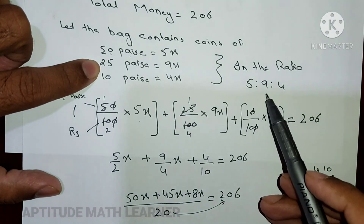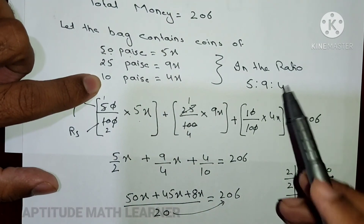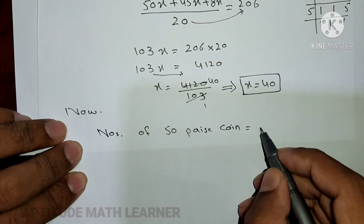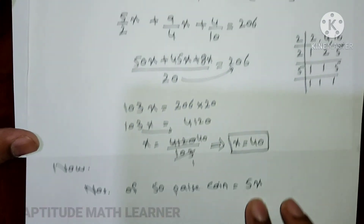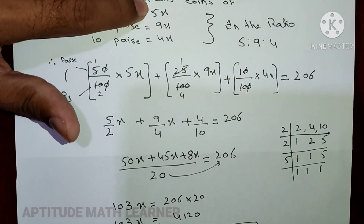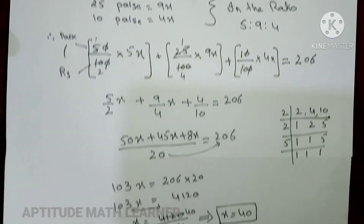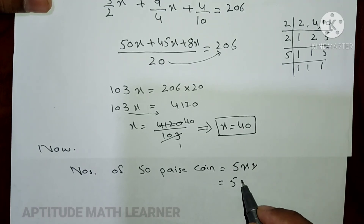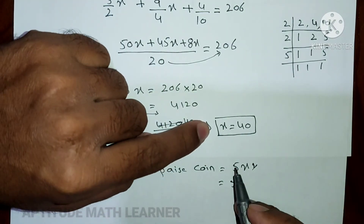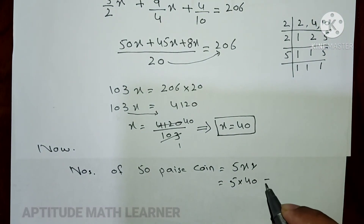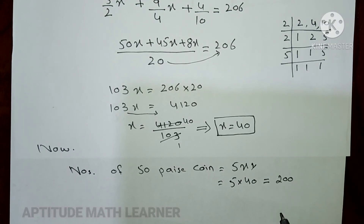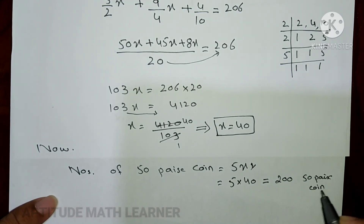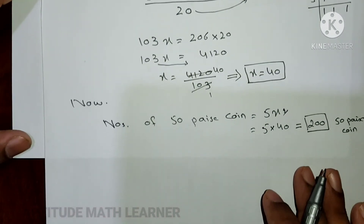25 paisa coins are in the ratio of 9 and 10 paisa coins in the ratio of 4. Number of 50 paisa coins = 5x = 5 × 40 = 200.